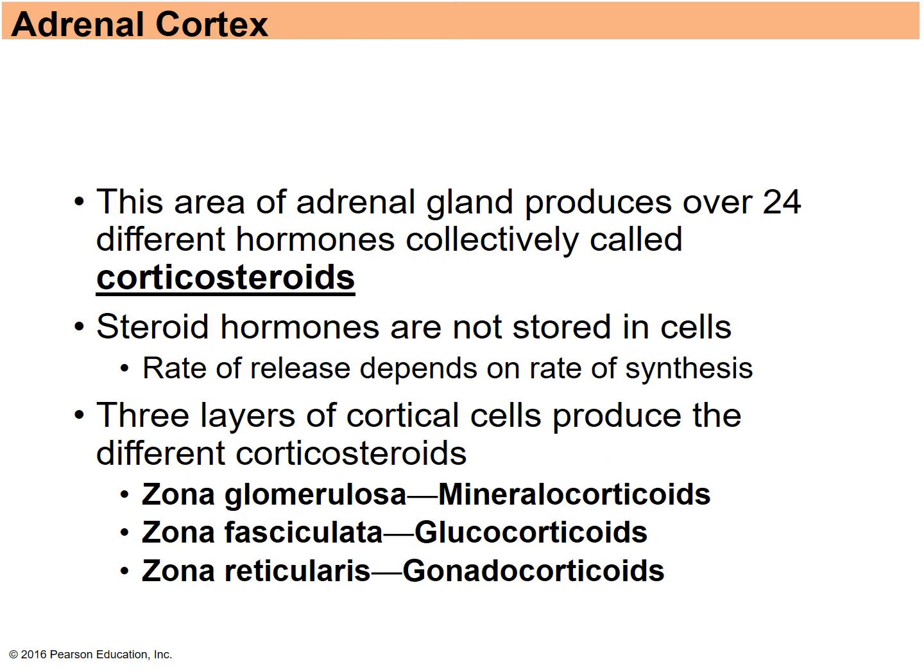The adrenal cortex produces several hormones collectively called corticosteroids. The release rate depends on synthesis, since steroid hormones are not stored in cells. There are three different layers of cortical cells producing different types of corticosteroids: mineralocorticoids, glucocorticoids, and gonadocorticoids.